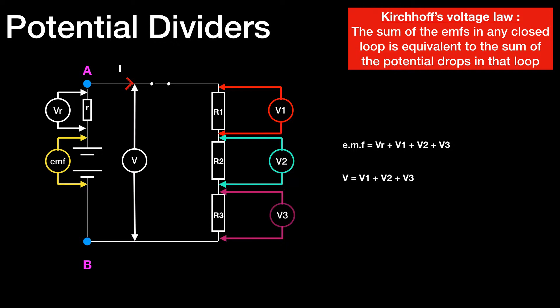Additionally, if we measure the terminal potential difference, because Vr is already accounted for internally, we can say that the terminal potential difference V is equal to V1 plus V2 plus V3.